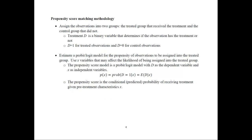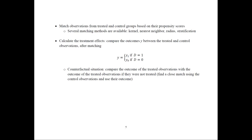Once we have estimated the propensity score model, we have predicted probabilities for every observation. Instead of matching on each X characteristic individually — such as age, education, or income — we lump them all into a propensity score and match on that. The goal is to find a match for each treated observation; we are not trying to find matches for the control group.